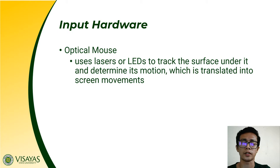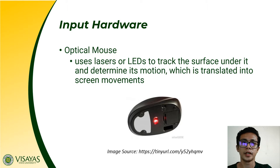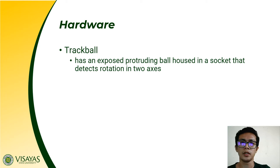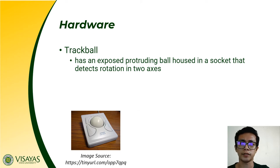When you say optical mouse, it uses lasers or light-emitting diodes to track the surface under it and determine its motion, which is then translated into screen movements. A mouse can also be a trackball. A trackball has a protruding ball housed in its socket that detects the rotation of two axes. This protruding ball can be moved or rotated in two different axes to move the cursor on your screen.